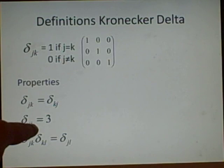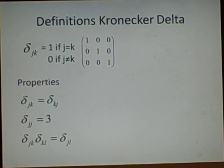We sum them, remember. So we'll have delta 11 plus delta 22 plus delta 33, which will be 1 plus 1 plus 1, which is 3.